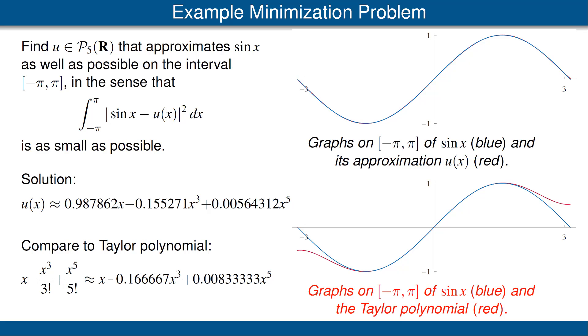How about the Taylor polynomial? Here's the graph of sin x and the Taylor polynomial, again on the interval from minus pi to pi. As you can see, the approximation looks quite good near zero. We can't even tell the two graphs apart, and we only see the blue.